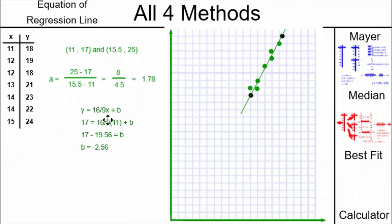I plug that slope in fraction form, 16 ninths, into the y equals ax plus b form for a straight line equation. And I also plug in one of the two points. This allows me to solve for b, the y-intercept. And in this case, we have gotten a y-intercept of negative 2.56.